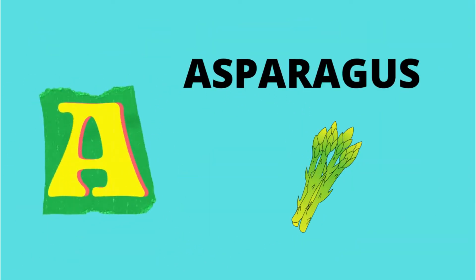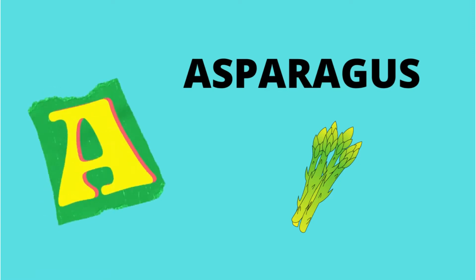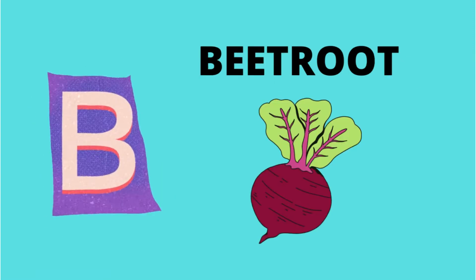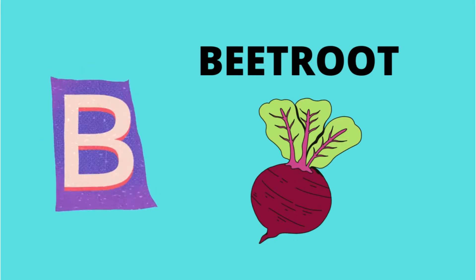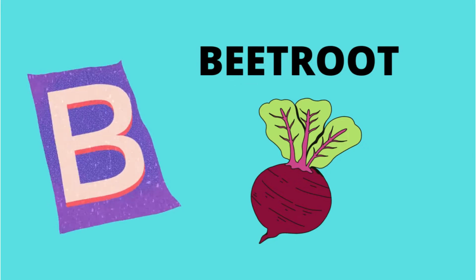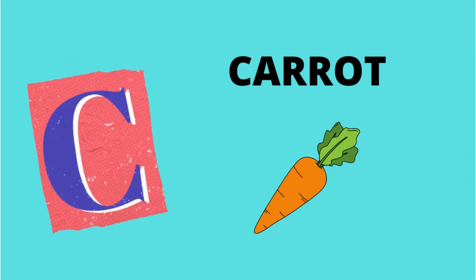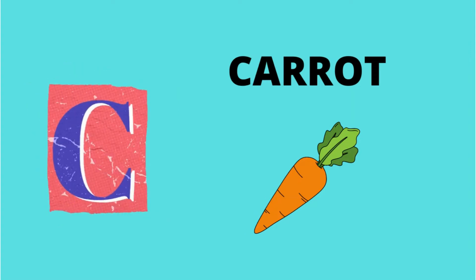A. A is for Asparagus. B. B is for Beetroot. C. C is for Carrot.